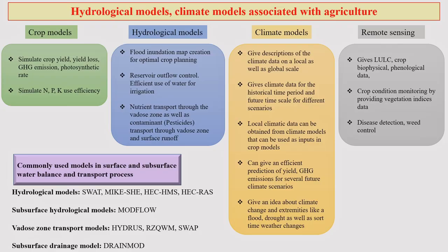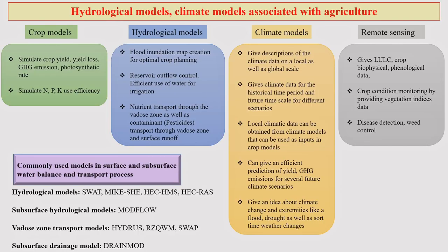If you look at how hydrological models and climate models can be utilized together in an integrated manner especially for agriculture purposes: crop models are used to simulate crop yield, yield loss, greenhouse gas emissions, photosynthesis rate, and nitrogen, phosphorus, and various nutrient use efficiencies. Hydrological models look at flood situations, reservoir outflow control, efficient use of water, irrigation, nutrient transport, and contaminant transport.